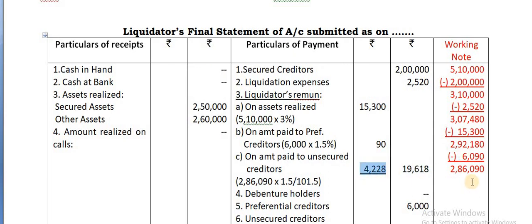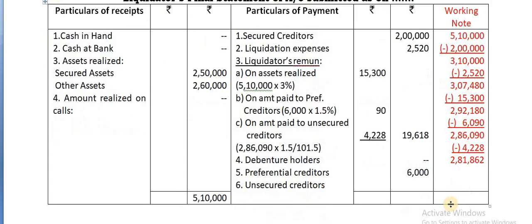This amount you have to deduct. So, the balance amount available is 2,81,862. This is the amount payable towards the unsecured creditors.